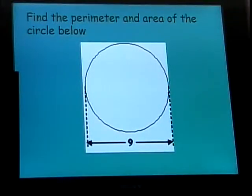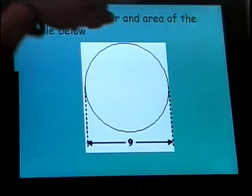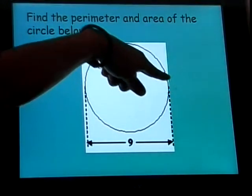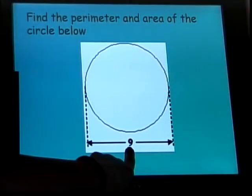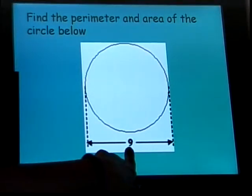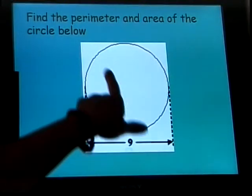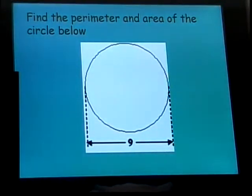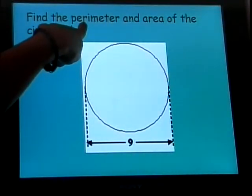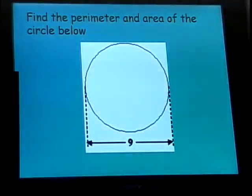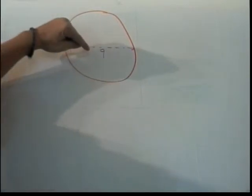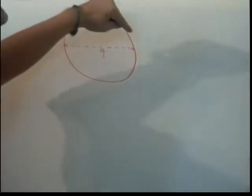In our next example we're asked to find the perimeter and the area of a circle. Now unfortunately in drawing the circle it was very difficult to put a number in the middle of the circle. So when I drew my picture I had to put this number down here. This number indicates that from one side of the circle to the other we have nine units. So when you go from one side of the circle to the other what you found is a diameter. So we're told that the diameter of this circle is nine units and we need to find the perimeter, remember another name for that is circumference, and the area of this circle. I'm going to pretend what I drew here is actually a circle.